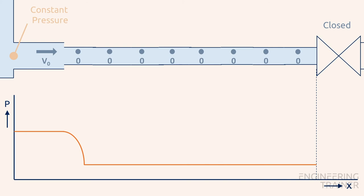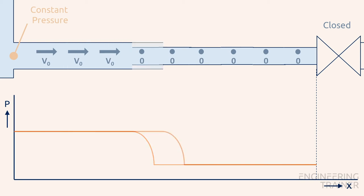Since we've neglected the friction the velocity will again be V0. Again the pressure wave runs through the pipe section until it reaches the valve.